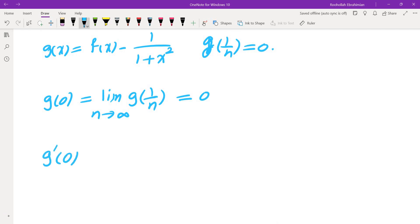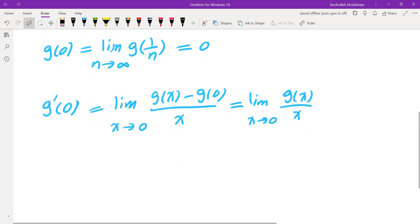Now I want to find out what is g prime of 0. So if you write down the definition of g prime you get g of x minus g of 0 over x as x approaches 0. Now what I know is g of 0. I know g of 0 is 0 so I need to find the limit of g of x over x as x approaches 0. I don't have all the values of g of x because I'm not given the function g of x.